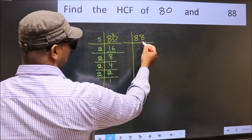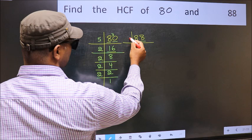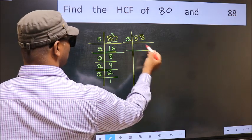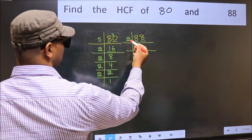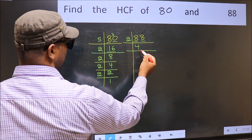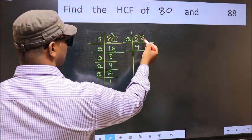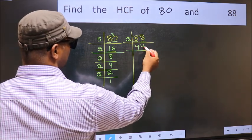Now the other number. Last digit 8, even so take 2. First number 8. When do we get 8 in 2 table? 2, 4, 8. The other number 8. When do we get 8 in 2 table? 2, 4, 8.